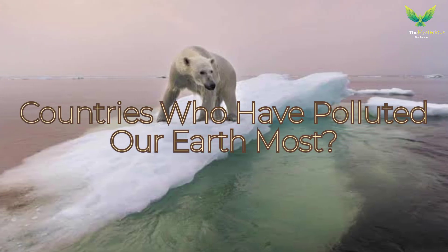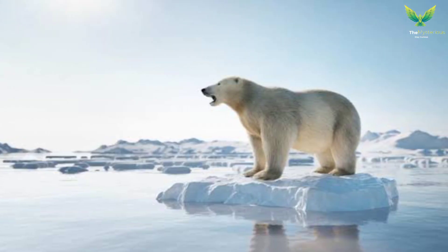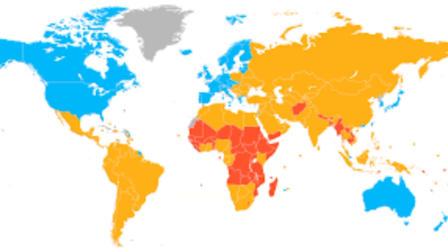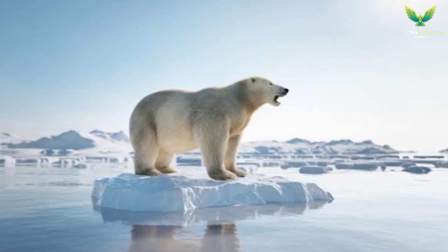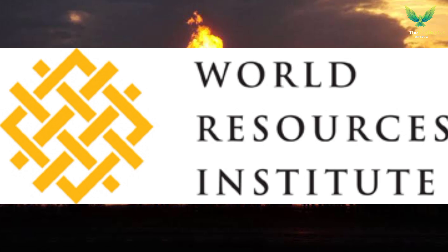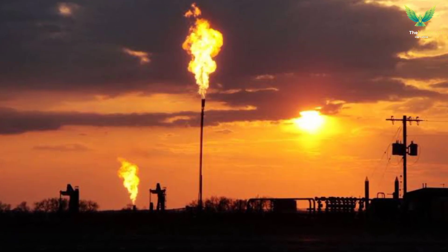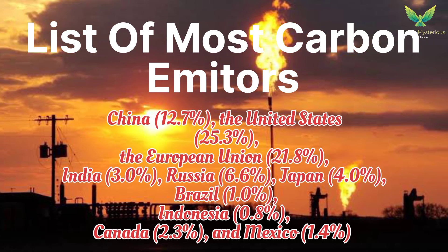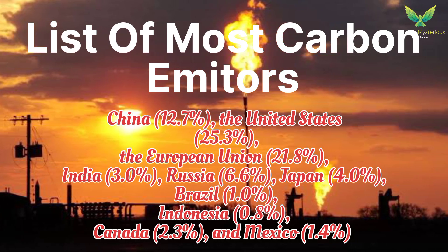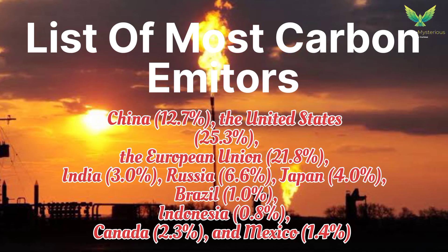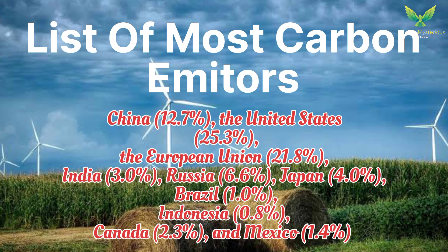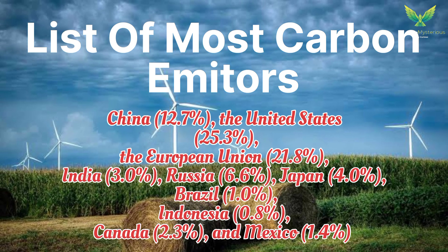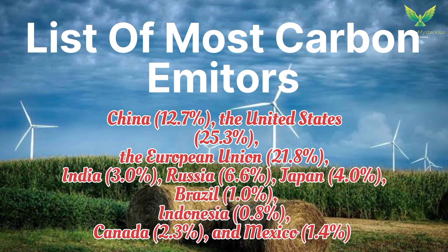Now let's look at the data of the countries that have polluted our Earth the most. The largest polluters throughout history are mostly developed countries that industrialized earlier and consumed more fossil fuels. According to a 2020 report by the World Resources Institute, the top cumulative emitters from 1751 to 2017 were the United States at 25.3%, the European Union at 21.8%, Russia at 6.6%, Japan at 4.0%, China at 12.7%, India at 3.0%, Canada at 2.3%, Mexico at 1.4%, Brazil at 1.0%, and Indonesia at 0.8%. However, some developing countries such as China and India are also increasing their emissions rapidly in recent years.